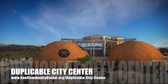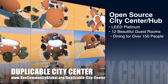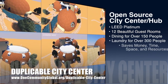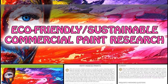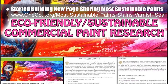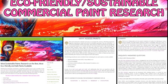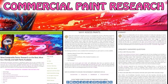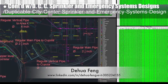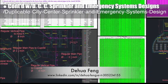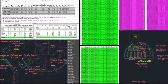One Community is also creating an open source duplicable city center designed to be LEED Platinum certified, provide 12 guest rooms, dining for over 150 people, and laundry and recreation space for over 300 people, all while saving money, time, space, and resources. This week the core team started building the new page sharing the best, safest, and most sustainable paints — creating the initial page setup, header and social media images, and writing the why summary and FAQ sections. Doua Feng, civil engineer, further updated the duplicable city center sprinkler and emergency systems designs, eliminating all 3.5-inch pipes and replacing them with more readily available 4-inch pipes and fittings in AutoCAD, and redoing all the related calculations.